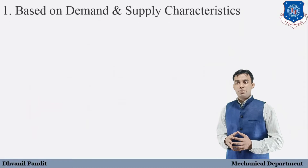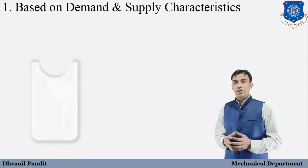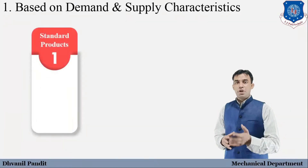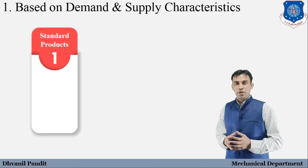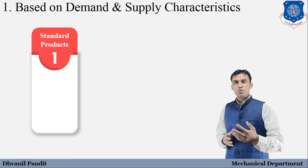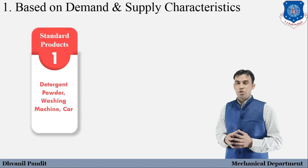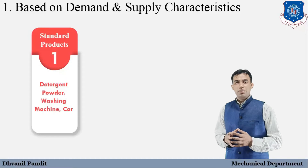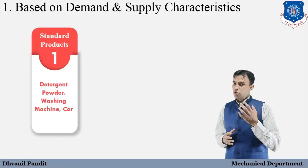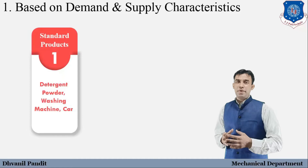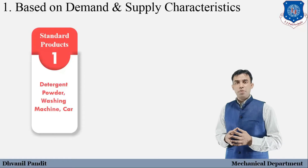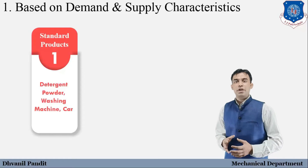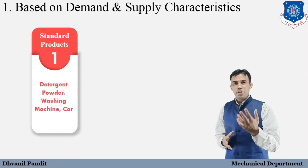The first type is based on demand and supply characteristics, and there are two sub-types. The first one is the standard product — a product which consumers use on a frequent basis, like detergent powder and washing machines. The manufacturer produces the product first, and then the sales and marketing department handles it, because the product mostly has an established demand. So it depends on the demand of the market.